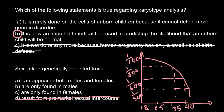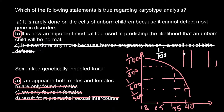Answer C — only found in females — is not true. The correct answer is A: sex-linked traits can appear in both males and females. You have probably heard that X-linked genetic disorders are more frequently found in males, and this is true. Females have two X chromosomes, while males have one large X chromosome and one small Y chromosome. If the occurrence of a defective gene is 1 in 100, then 1 female out of 100 would be a carrier.